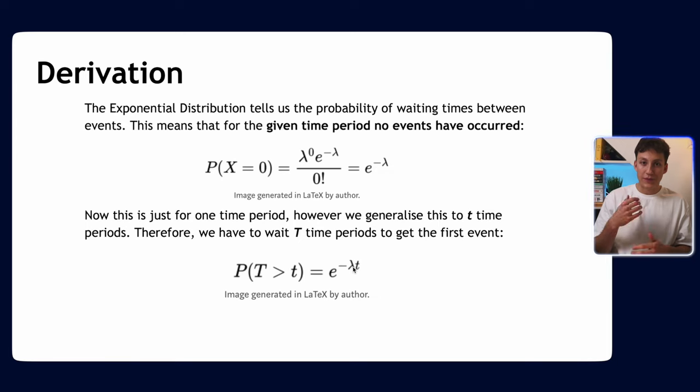We haven't got any for this time period—what's the probability for the next one, and the next one, until we wait t time periods to get the first event. It's a mathematical expression—don't worry too much about it, it makes intuitive sense. All we're saying is we're going to wait a certain amount of time periods until our first event. What's the probability of this happening?